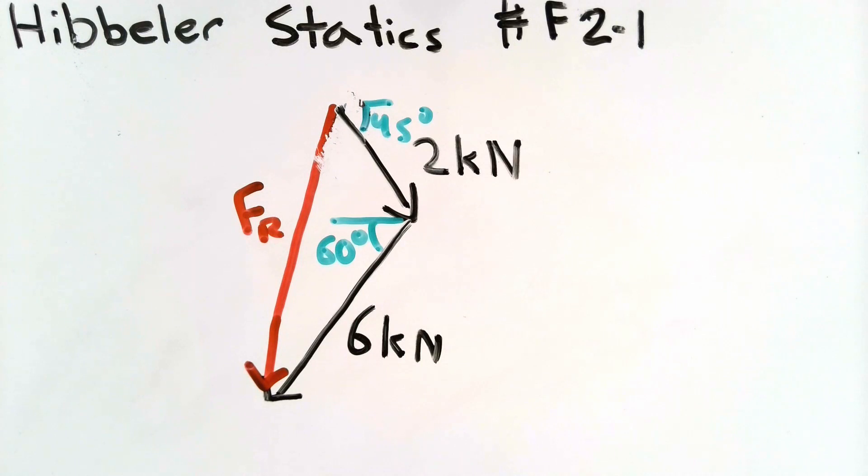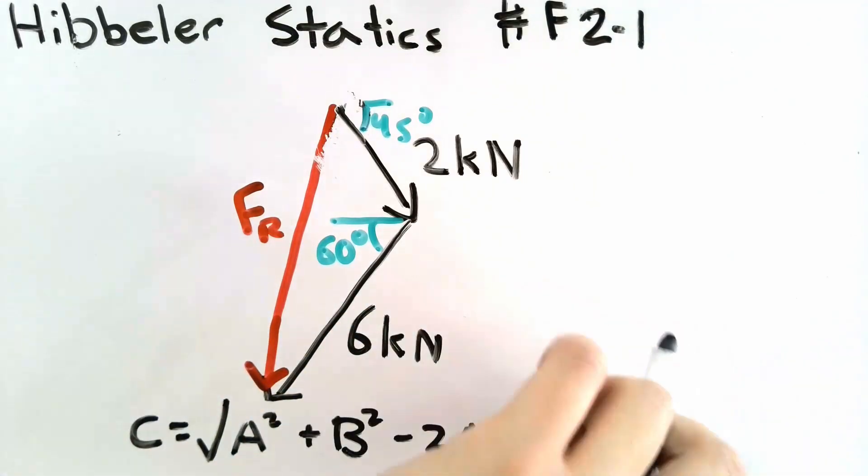So what we essentially have is a triangle with two known sides and at least one known angle. There's a law that we can use to find the magnitude of the resultant force vector. That is called the cosine law. The cosine law tells us that one of the sides of the triangle will be equal to the square root of the square of one side of another side plus the squared of the third side minus twice the product of the two known sides times the cosine of the angle corresponding to your unknown side.